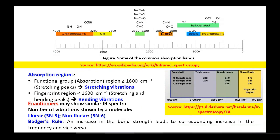Some common absorption bands: halogenated carbons (C-F, C-Cl, C-Br, C-I) appear in the lower wave number region. C=O, C=C, C=N bonds usually occur in the region of 1500 to 1800 cm⁻¹. C≡C, C≡N, NCO, NCS, and CN appear in the region of 2100 to 2300 cm⁻¹. X-H bonds such as N-H, O-H, and CONH appear in the region of 2800 to 4000 cm⁻¹, and C-H vibrations predominantly appear in the region of 2800 to 3200 cm⁻¹.